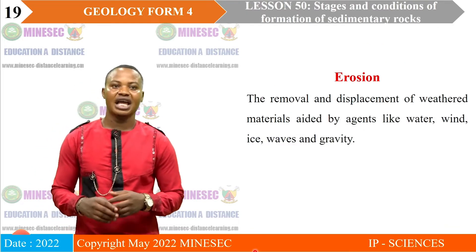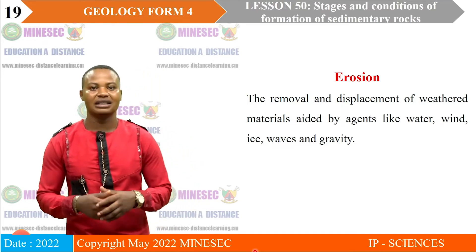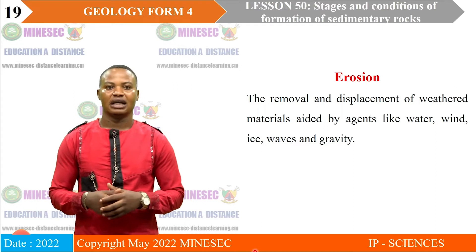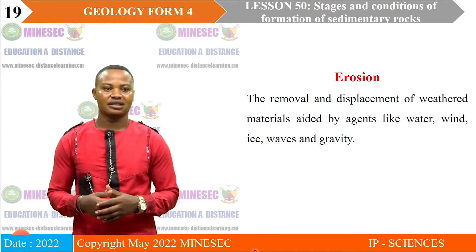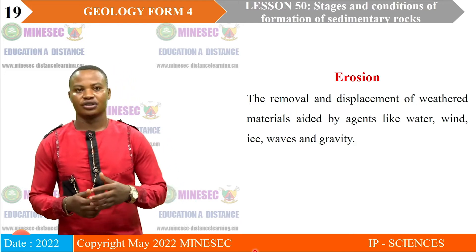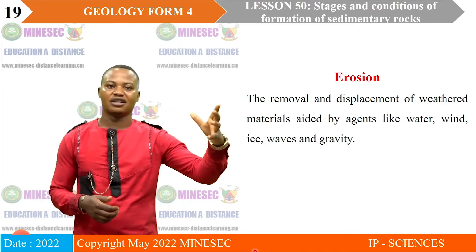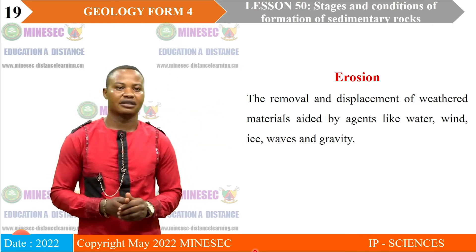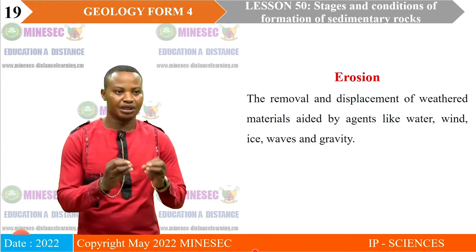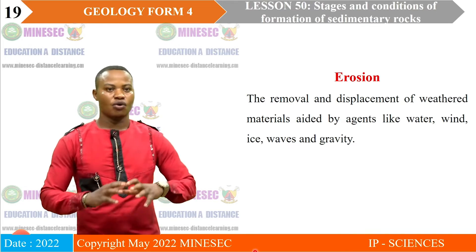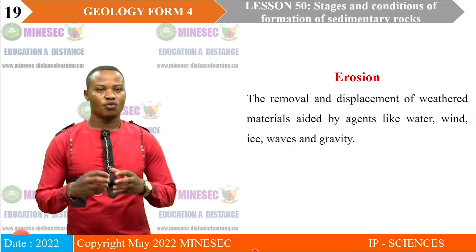The next stage is erosion. Erosion is the mobilization and displacement of weathered materials, aided by agents like water, wind, ice, waves, and gravity — with gravity as the main engine, moving materials from high-altitude to low-altitude areas. Weathering breaks the rock into smaller fragments; erosion then mobilizes, removes, and displaces these weathered fragments.